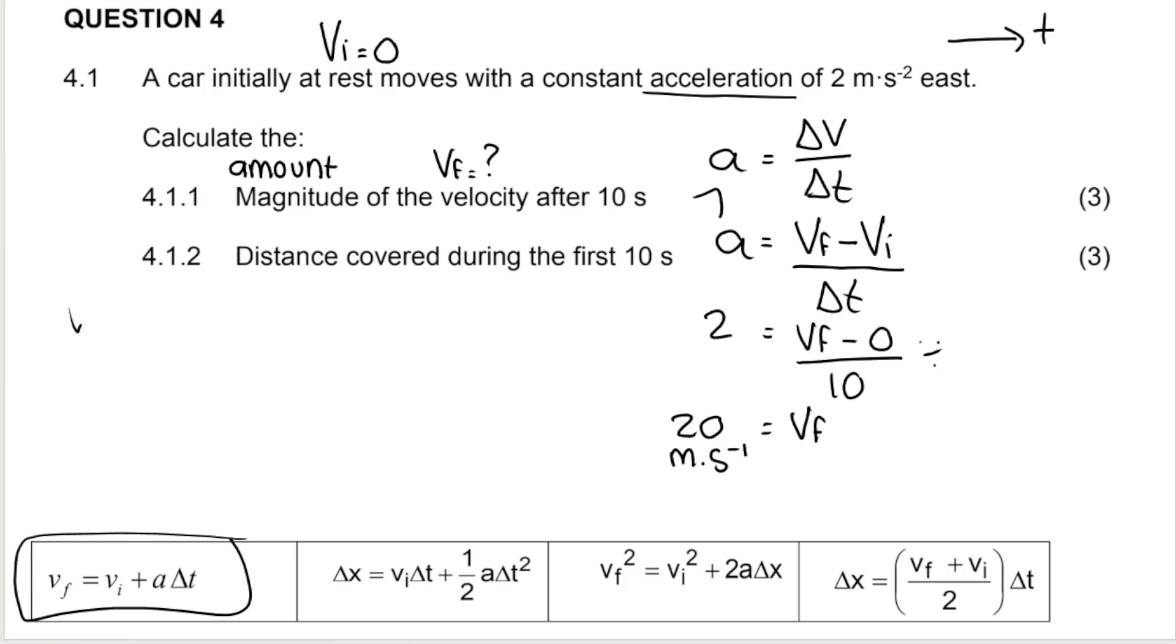So you could write down your equation first, your blank formula first. Then you substitute, you're looking for the final. The initial is 0. The acceleration is 2. And we're traveling for 10 seconds. So essentially 2 times 10, 20. Same answer, because it's basically the same formula.